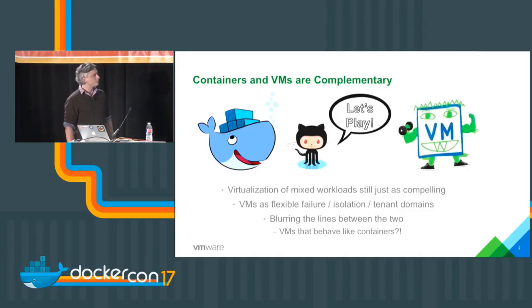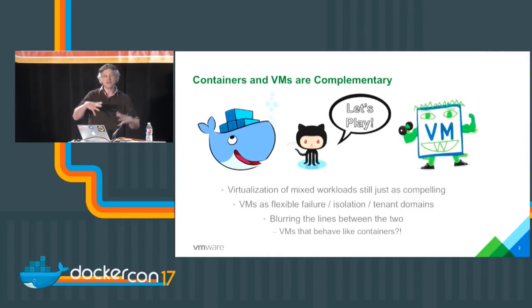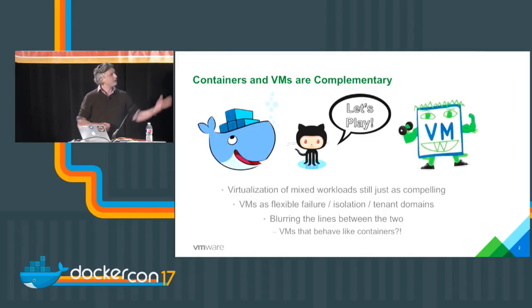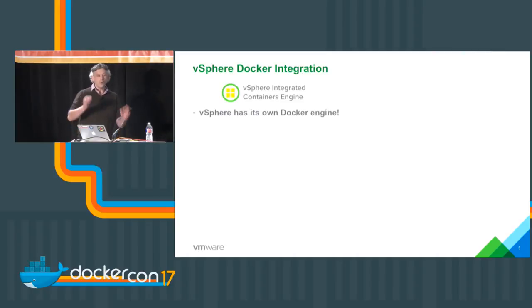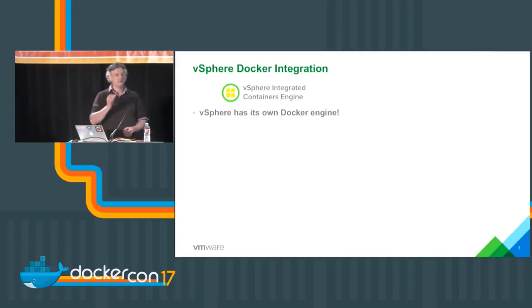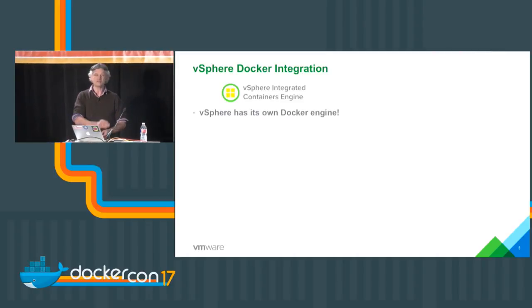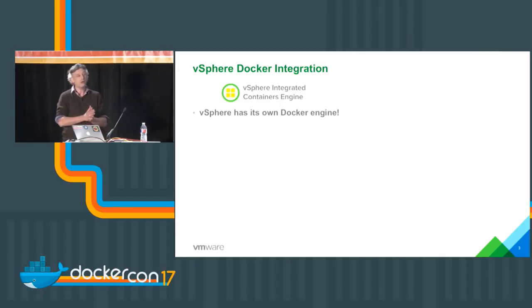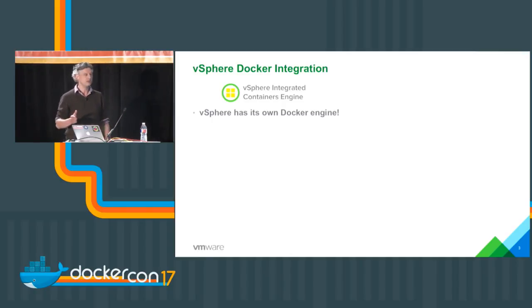What we've been doing at VMware is blurring the lines between containers and VMs, trying to integrate these things to make the experience better for our customers — all in open source, which I'm very proud of. In this slide we're going to look at the features and products we're building that integrate Docker with vSphere. The first one we'll look at very briefly is vSphere Integrated Containers Engine, or VIC Engine.